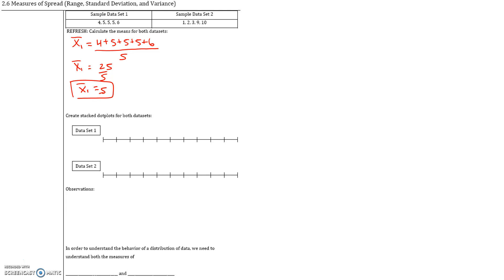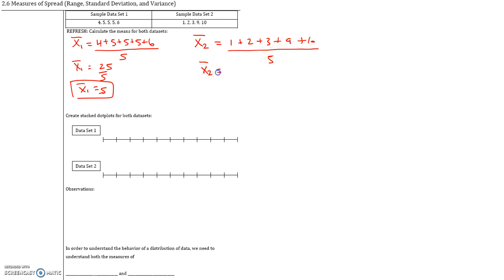For the second sample data set, we use X2 bar — X bar because it's a sample mean, and X2 because it's our second data set. This equals 1 plus 2 plus 3 plus 9 plus 10, divided by 5. This is 25 divided by 5, which is 5.